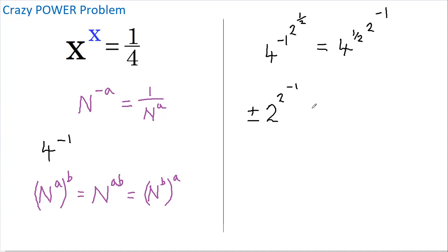Now if we apply this rule again, we're allowed to multiply the powers. So this becomes plus or minus 2 to the power of 2 multiplied by the power of negative 1, which gives us 2 to the power of negative 2.